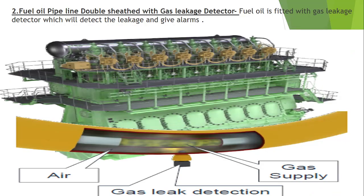The second safety is the double seating. The pipeline provided in a window valve is fitted with a gas leak detection system. Gas is passing through this pipeline and outside there is air. If there is a leakage of this pipeline, the gas will leak outside. A gas leak detection detector is provided which will detect the leakage and give an alarm. So: fuel oil pipeline double seated with gas leak detector, which will detect leakage and give alarm.